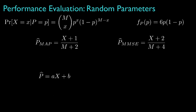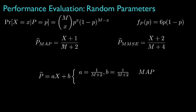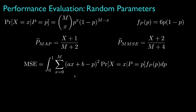To evaluate the mean square error for the estimators, both have the form AX plus B. For the MAP estimator, A is 1 over M plus 2 and B is 1 over M plus 2, whereas for the minimum mean square error estimator, A is 1 over M plus 4 and B is 2 over M plus 4. We can evaluate the mean square error for arbitrary values of A and B, and then substitute the values for each estimator to evaluate their particular mean square error values.